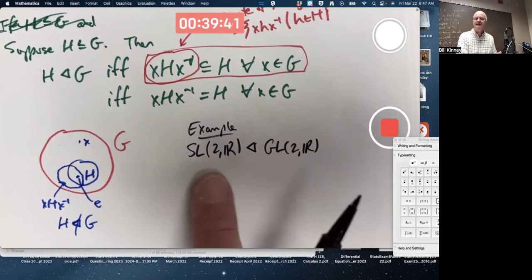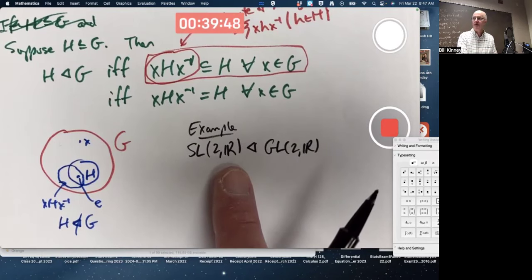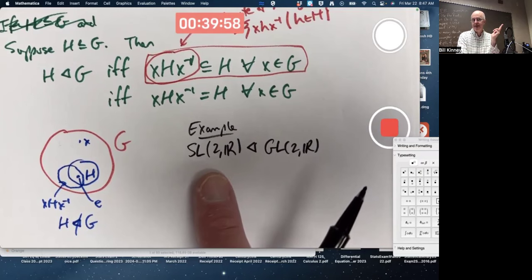SL(2,R) is called the special linear group. G means general. S means special. All two by two matrices with real entries whose determinant equals one exactly. The identity matrix has a determinant of one, so it's definitely in there. There are other matrices that are not the identity that have a determinant of one.